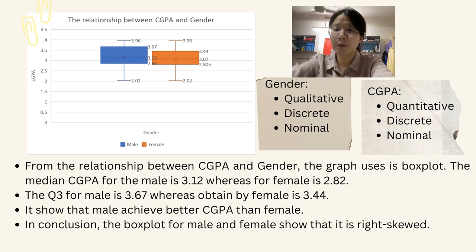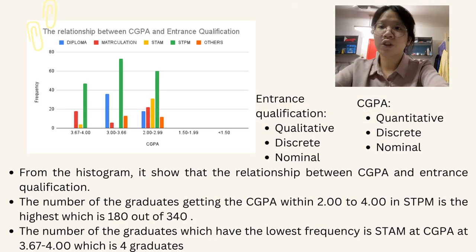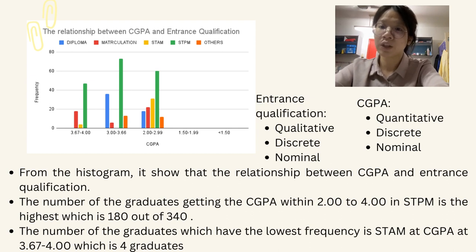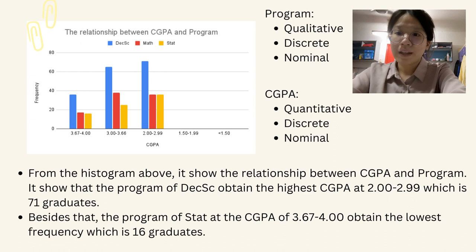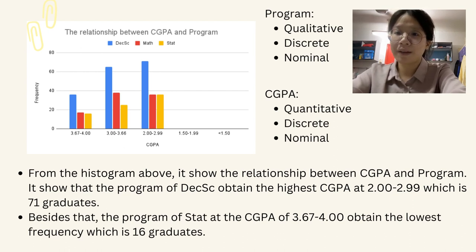In conclusion, the box plot for both male and female shows a right-skewed distribution. From the histogram showing the relationship between CGPA and entrance qualifications, the number of graduates obtaining CGPA within 2 to 4 in STPM is the highest, at 180 out of 340. The number of graduates with the lowest frequency is STAM at CGPA 3.67 to 4, which is 4 graduates. The histogram also shows the relationship between CGPA and programme — Decision Science obtained the highest CGPA at 2 to 2.99, with 71 graduates, while Statistics at CGPA 3.67 to 4 obtained the lowest frequency, with 16 graduates.